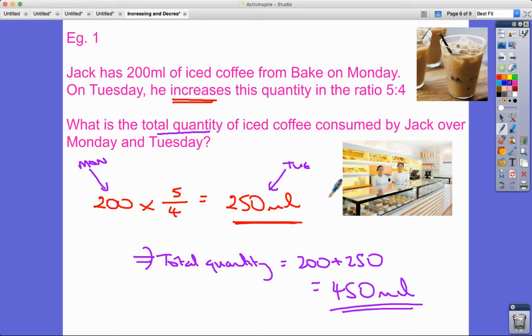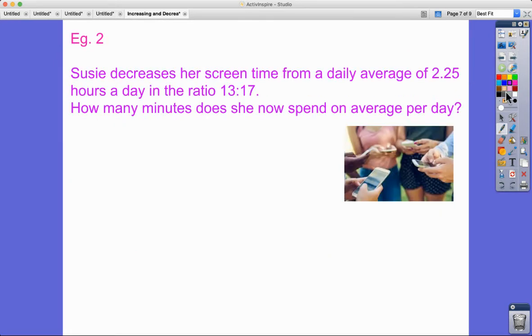Example 2: Susie decreases her screen time from a daily average of 2.25 hours a day in the ratio 13 to 17. How many minutes does she now spend on average per day?